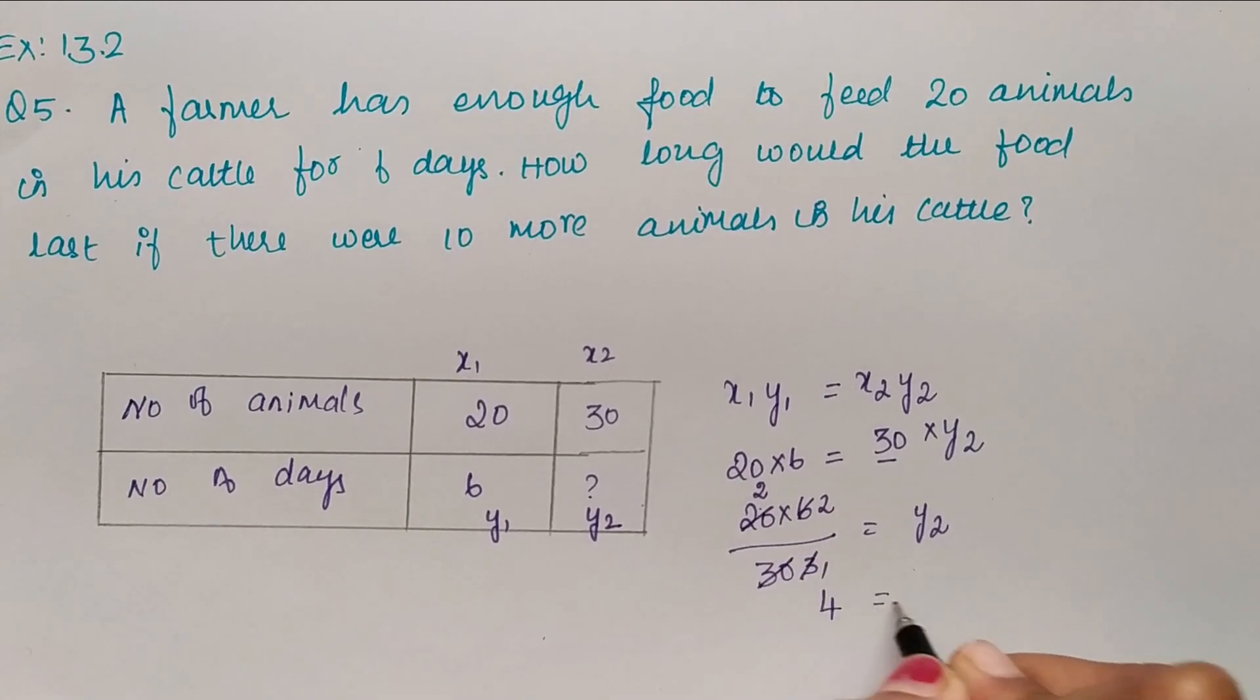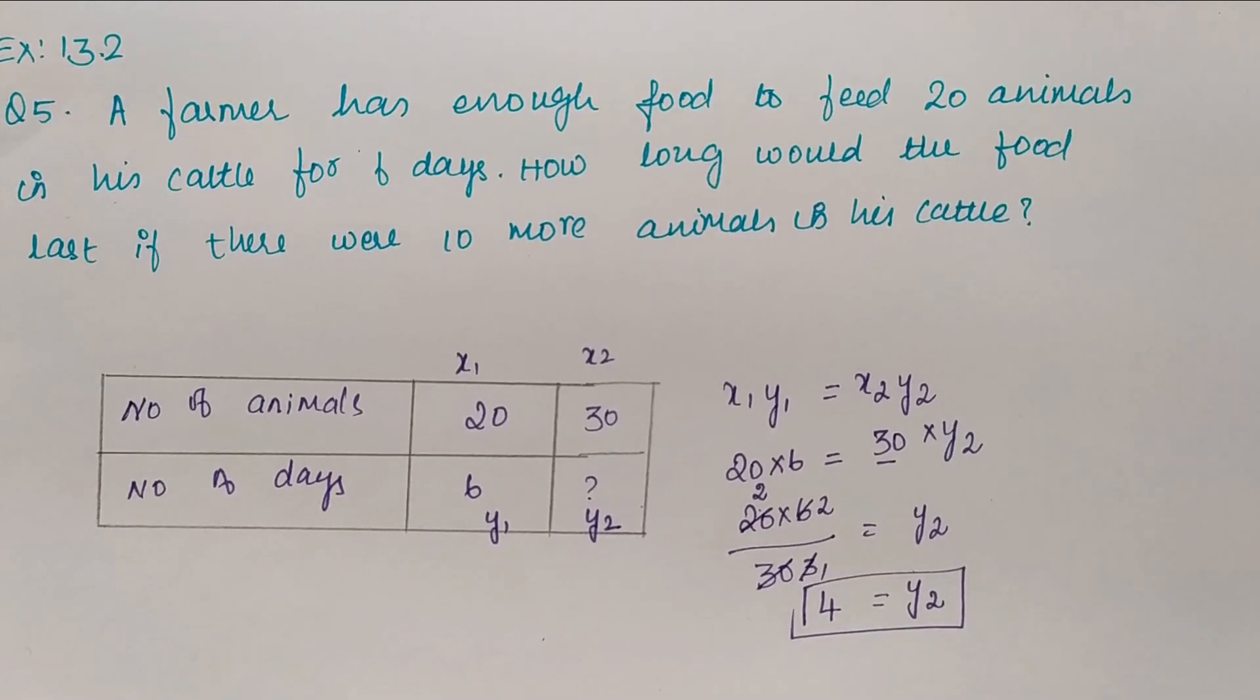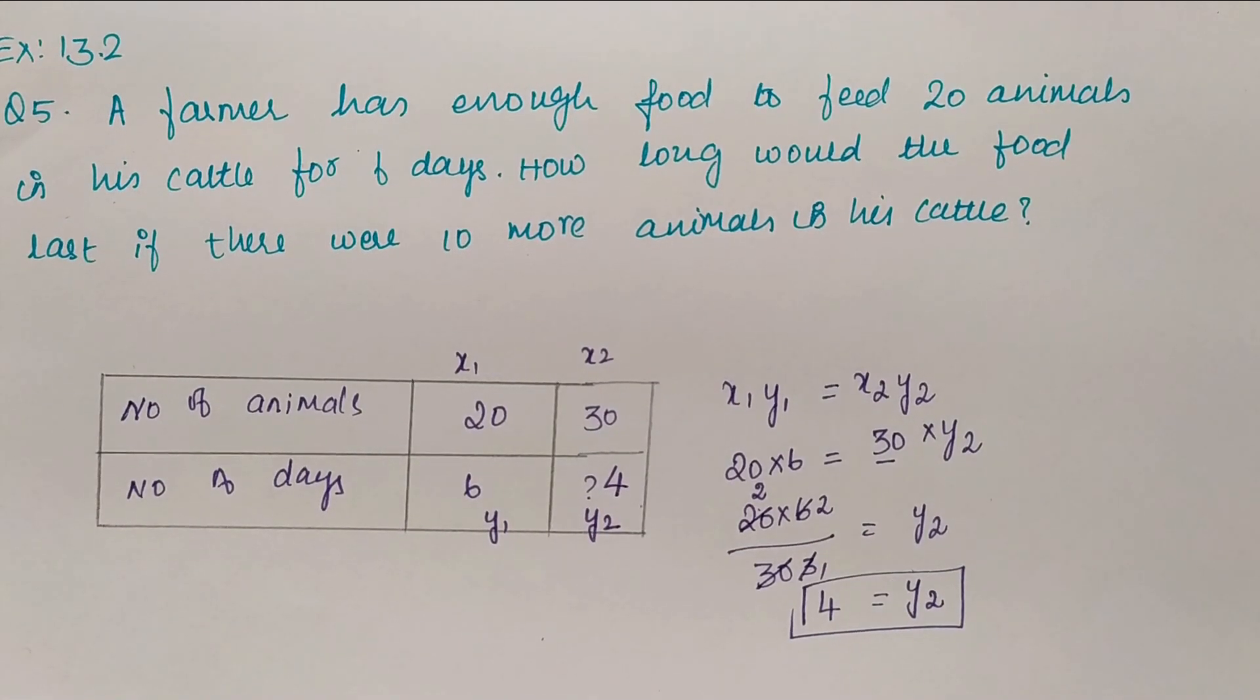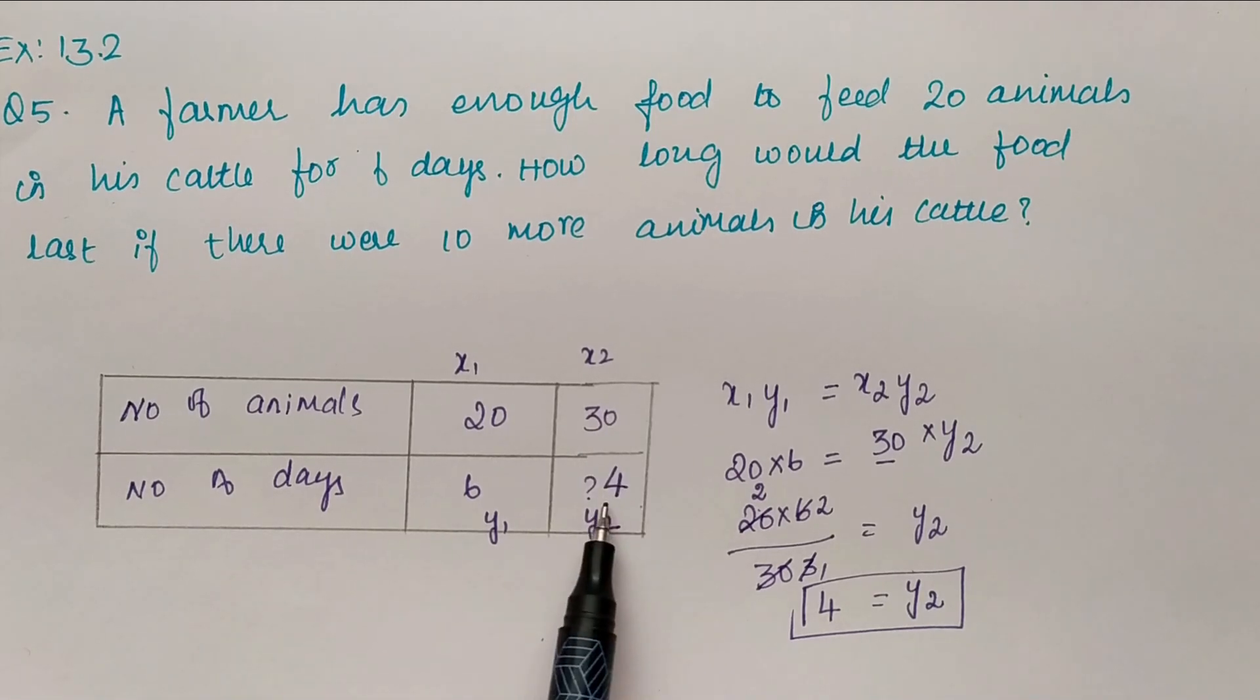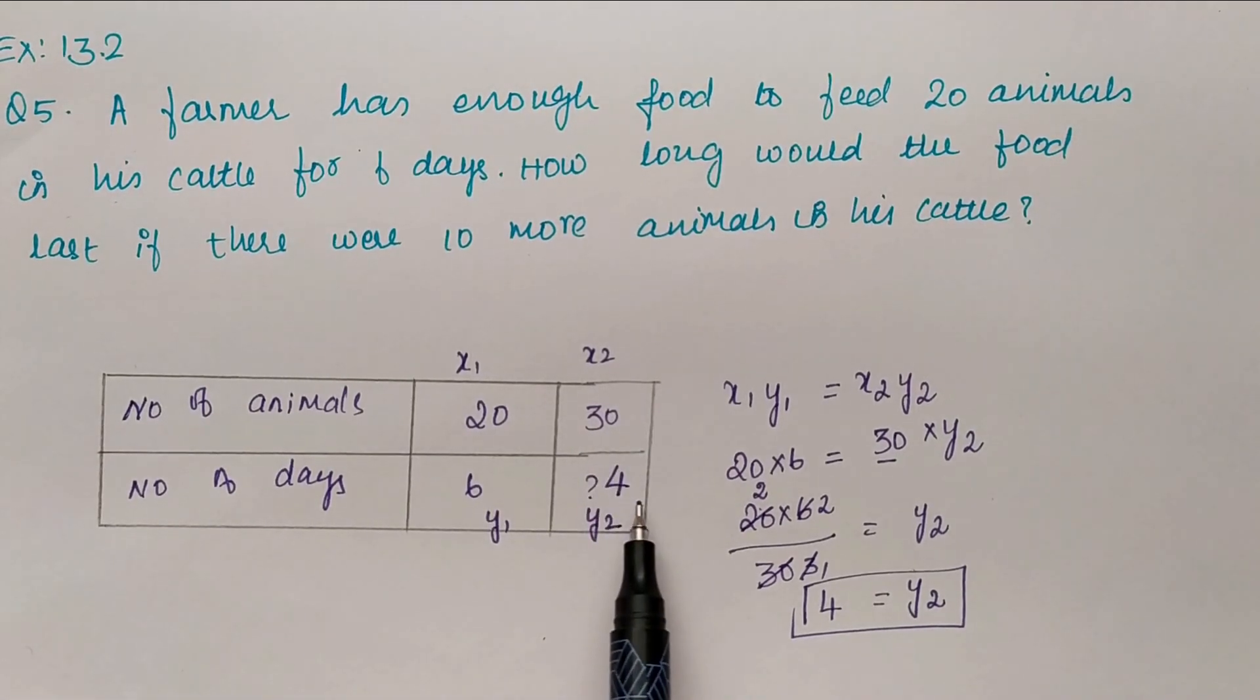So for 30 animals you can feed 4 days. If the number of animals increases, the number of days will decrease, so these two are in inverse proportion.